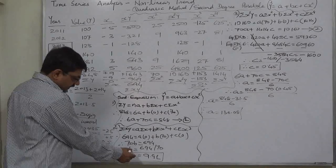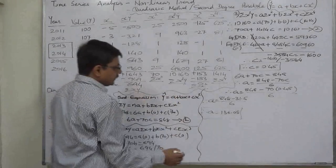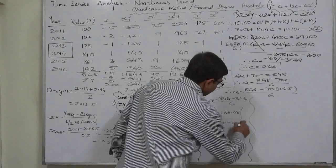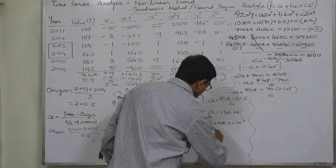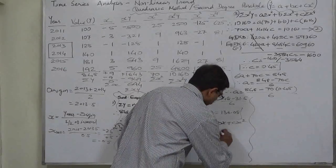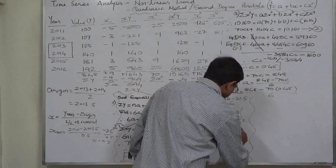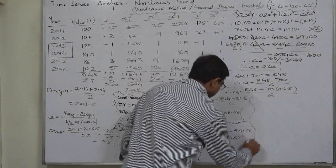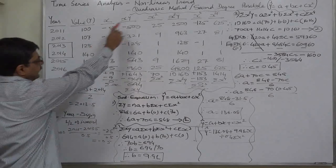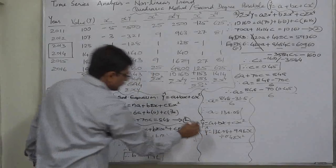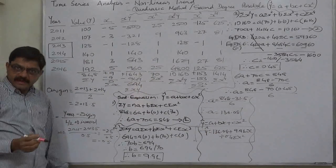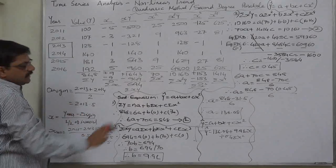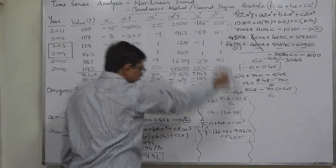We now have all three constants. The fitted trend equation is: Ŷ = 136.08 + 9.91X + 0.45X². By substituting all X and X² values into this equation, we can obtain the estimated (trend) values for all six years in the time series. I leave it to you to find the trend values for all six years.